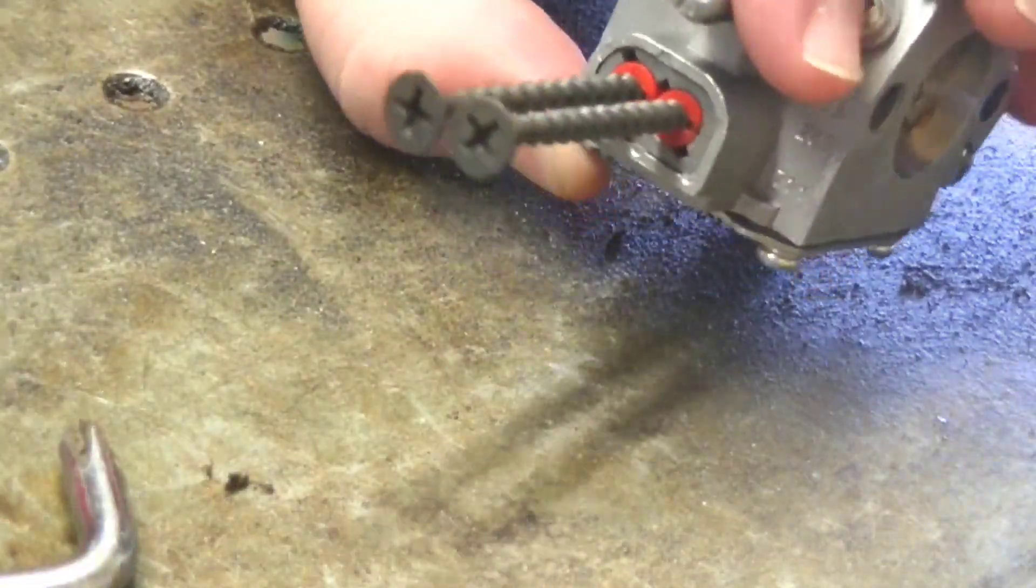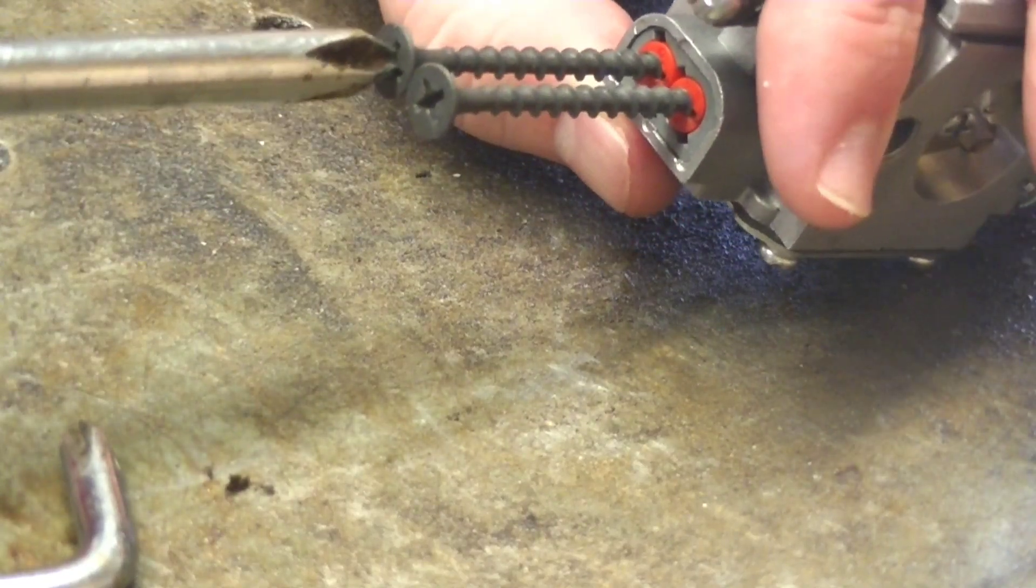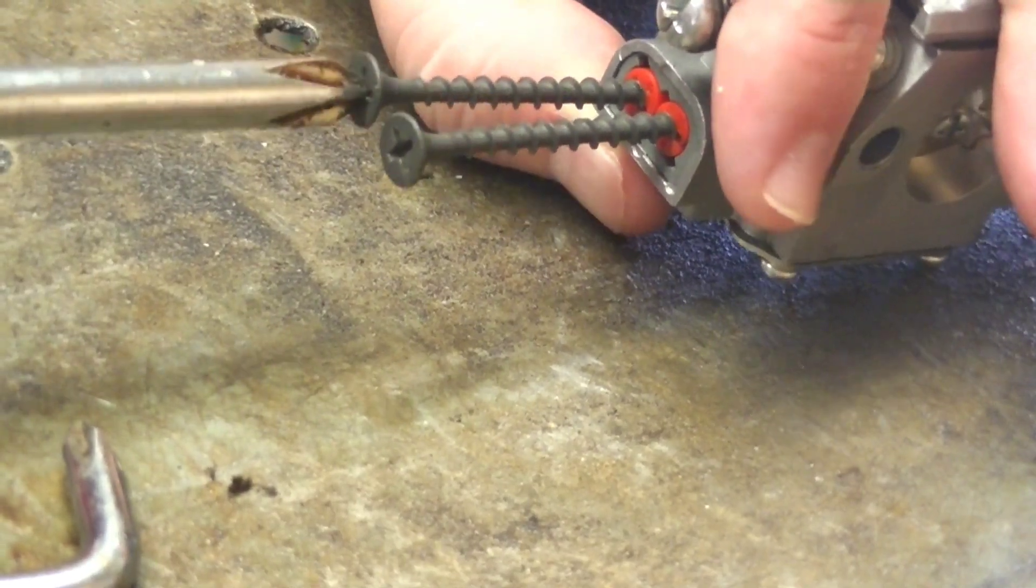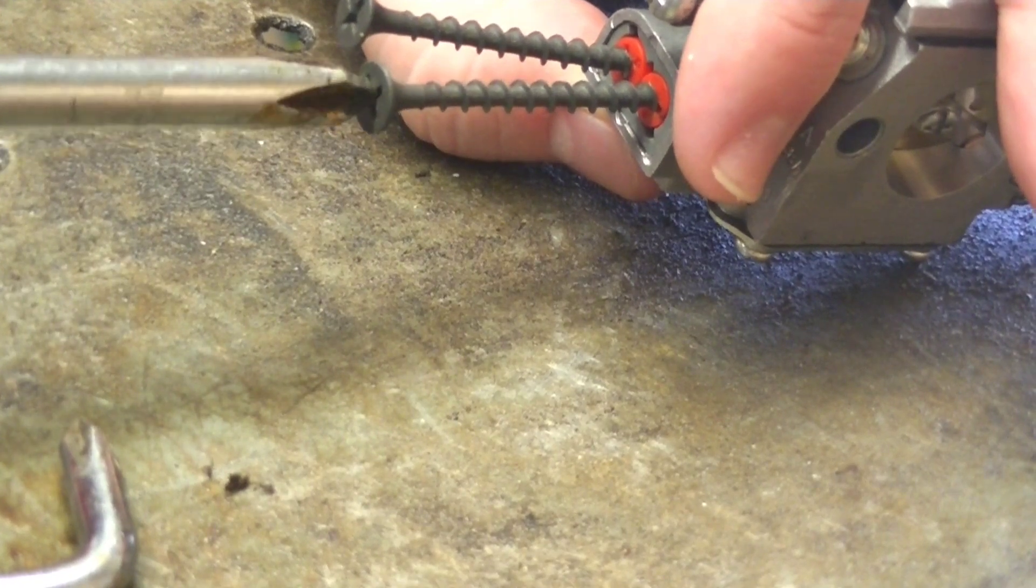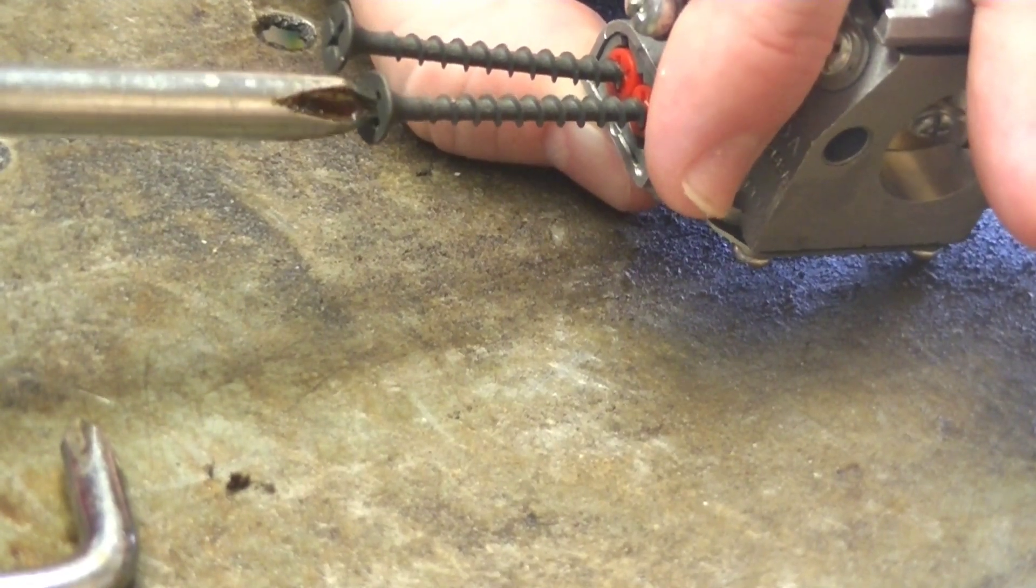All right. So, now is when you're going to take your flathead, not your flathead, your Phillips head screwdriver, and you're just going to individually turn them in like this. Then you go back to the one on the right, and you turn it like that.